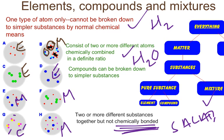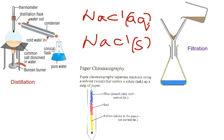In terms of compounds being broken down: compounds can be broken down chemically, but they cannot be broken down physically. To wrap up, remember distillation, filtration, and chromatography — they separate things by physical means, meaning each thing holds on to its identity and there's no chemical reaction taking place.